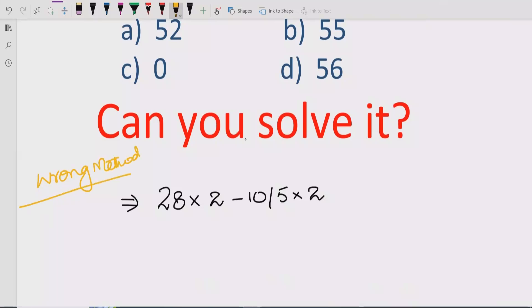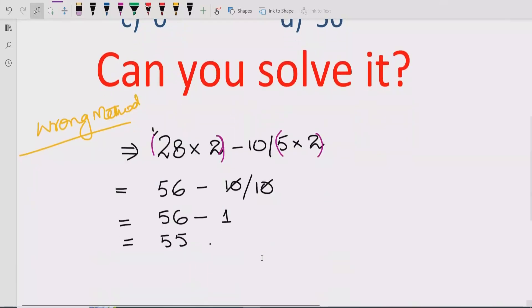The wrong method is basically some people multiply this first, so 28 multiplied by 2, which is 56. And this one also multiply. They solve like this way: 28 multiplied by 2 which is 56, and after that they solve minus 10 divided by 5 multiplied by 2, which gives 10 over 10. Then 56 minus 1, and they get the answer 55. This is not the correct answer.